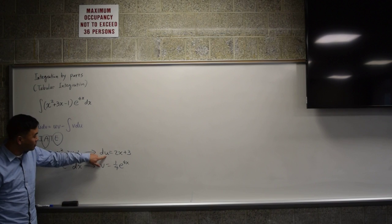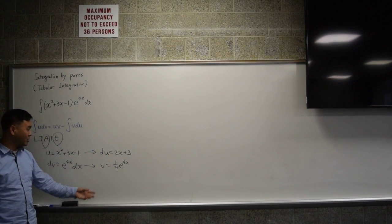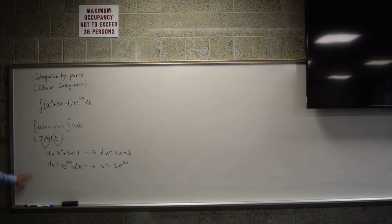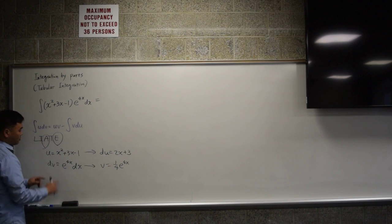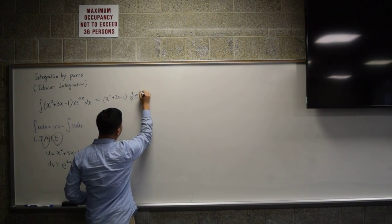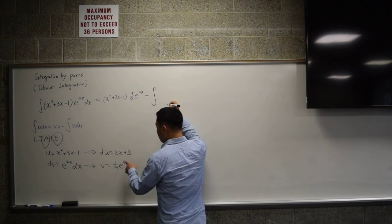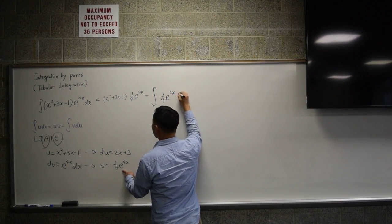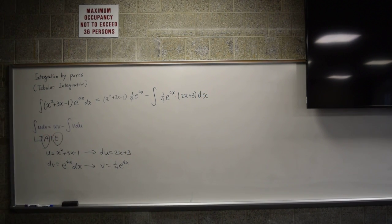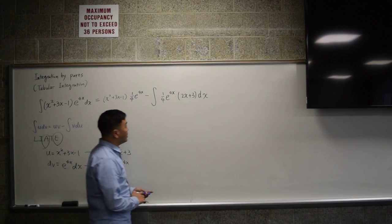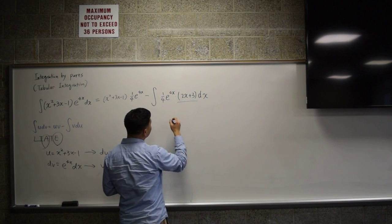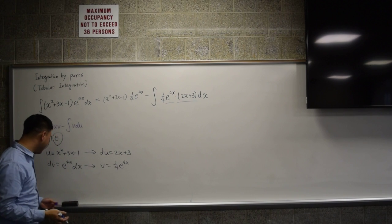Now you can say that this integral is Uv minus v du, so it's x squared plus 3x minus 1 times one-fourth e to the 4x, minus one-fourth e to the 4x times 2x plus 3 dx. For this remaining integral, 2x plus 3 times e to the 4x requires another integration by parts. Again, 2x plus 3 is algebraic and e to the 4x is exponential.